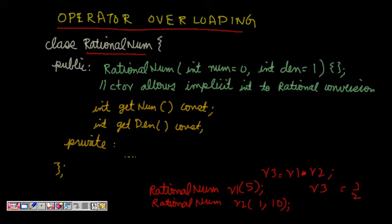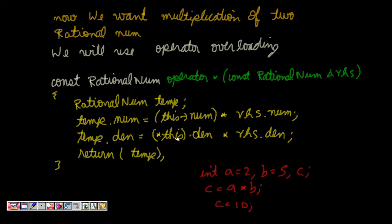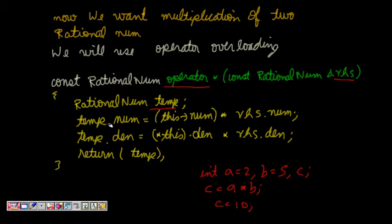This is where operator overloading comes in. For class objects, if we want operators to work, we use operator overloading. I'll write: const RationalNumber operator*(const RationalNumber& rhs). Inside, I create a RationalNumber temp, set temp.num = this->num * rhs.num, and this->denominator * rhs.denominator. I basically multiply the numerator and denominator from this object and the argument object, then return temp.